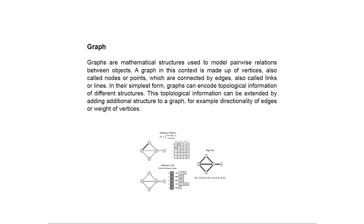Graphs are sort of abstract objects, but in computer science we use three different notations to represent them. There's the edge set notation, the adjacency list, and the adjacency matrix. Each of these is equivalent — they show the same information in a slightly different way. These are the most commonly used and they relate directly to how we would implement graphs in a computer program like Python.